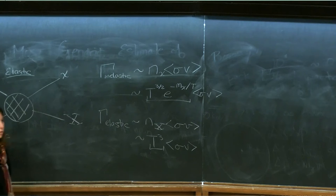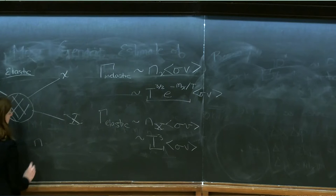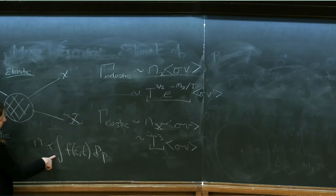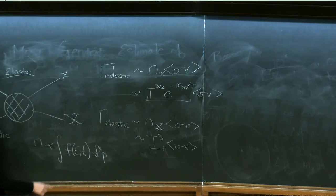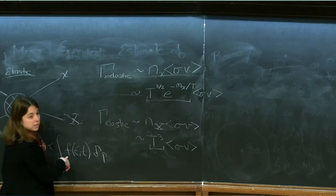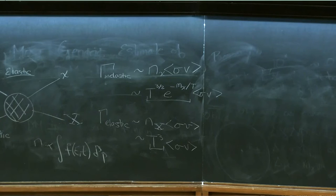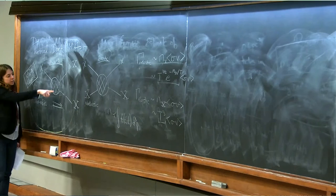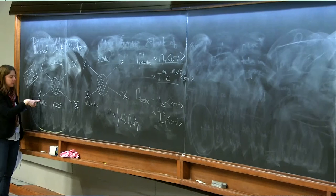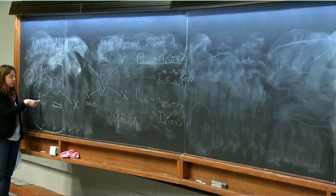You can derive that yourself as an exercise. The number density is proportional to the integral of the phase space density over momentum, and if you put in the relativistic form for f you get T cubed, and if you put in the non-relativistic form you get that T^(3/2) exponential factor. The inelastic process will essentially stop when the rate for the forward interaction becomes comparable to the Hubble rate, because at that point the dark matter particle can't find its partner — they're moving apart too quickly, so the process shuts off.